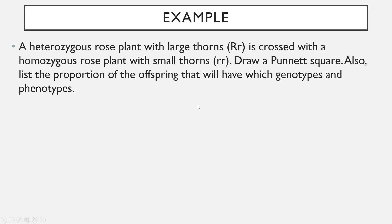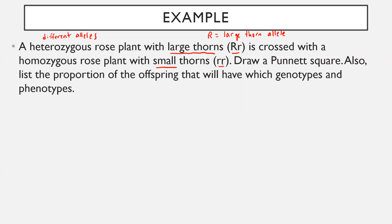Let's do a couple quick examples. A heterozygous rose plant — remember, heterozygous means different alleles — with large thorns, genotype capital R, lowercase r, is crossed with a homozygous rose plant with small thorns, genotype lowercase r, lowercase r. Since the heterozygous plant has large thorns with a capital R, that tells us capital R is the large thorn allele, and large thorns must be a dominant trait. The small thorns plant has two lowercase alleles, so small thorns must be a recessive trait.